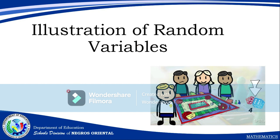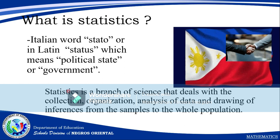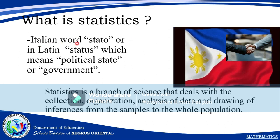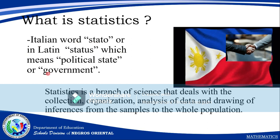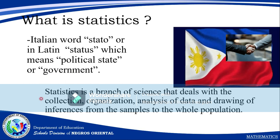Illustration of random variables. What is statistics? It came from an Italian or Latin word 'status,' which means political state or government. Statistics is a branch of science that deals with the collection, organization, and analysis of data, and drawing of inferences from samples for the whole population.